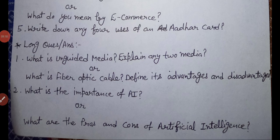Long question answers. First: what is unguided media? Explain any two media, or what is fiber optic cable — define its advantages and disadvantages. These long questions are from the third chapter on computer networks. Second long question: what is the importance of AI, and what are the pros and cons of artificial intelligence? This completes the sample paper for English medium plus two computer science. Thank you students for watching. Please like and share the video.